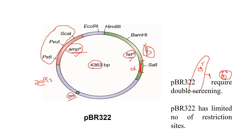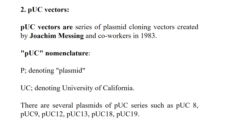pBR322 requires double screening: the first step confirms transformation, and the second step confirms whether the desired gene was cloned. pBR322 has a limited number of restriction sites — 11 sites across the tetracycline and ampicillin genes. This limitation led to the need to modify this vector to increase the number of restriction sites and allow single-step screening.